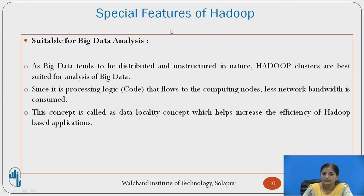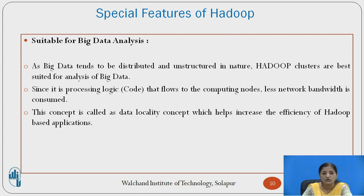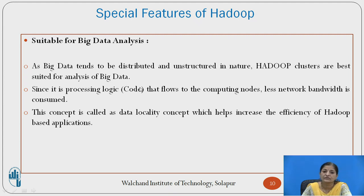Now let us move to some special features of Hadoop. Hadoop is suitable for big data analysis — as big data tends to be distributed and unstructured in nature, Hadoop clusters are best for analysis of such data. Since the data is unstructured, RDBMS cannot be used, but NoSQL databases can be used to store such data. Note that Hadoop is not suitable for smaller applications because a lot of overhead is incurred — initiating the name node, initiating data nodes, and protocol exchanges between them all take a large amount of time for small applications. For big data analysis, Hadoop is most preferable.